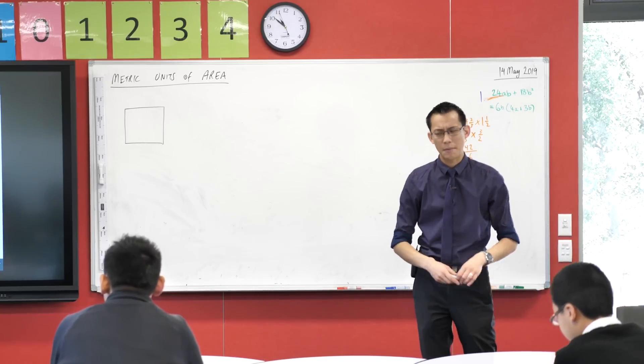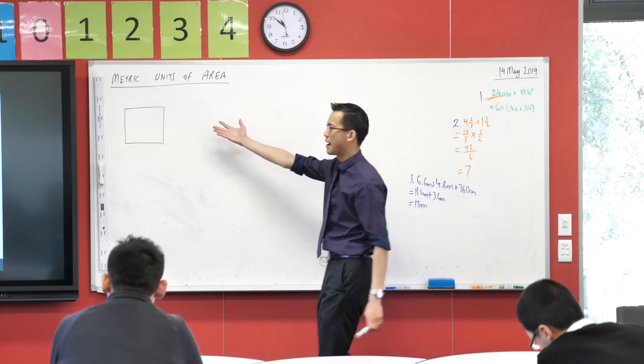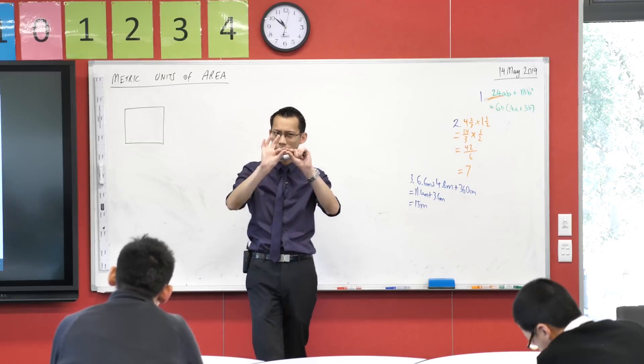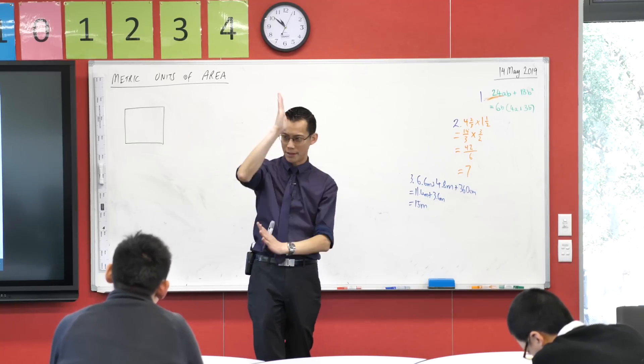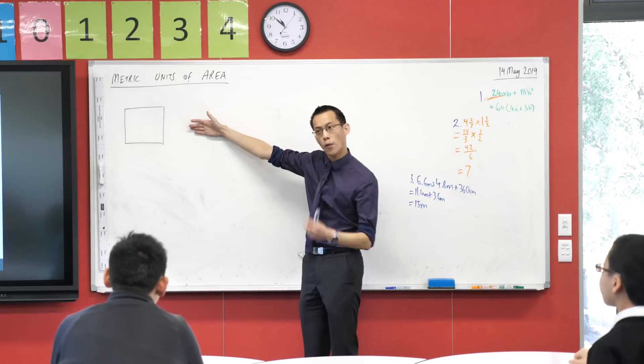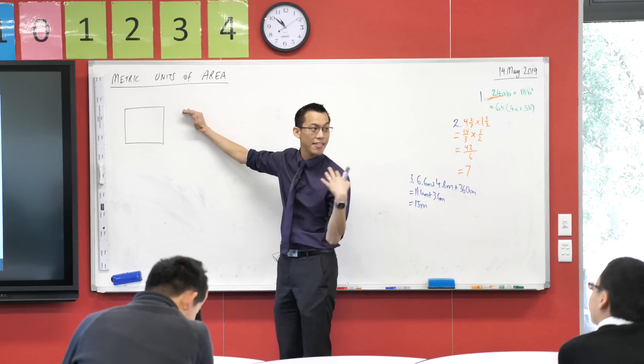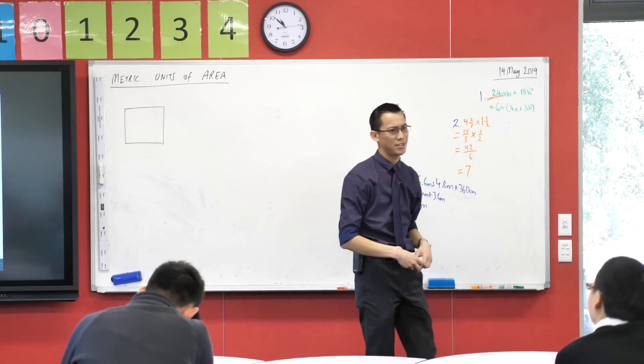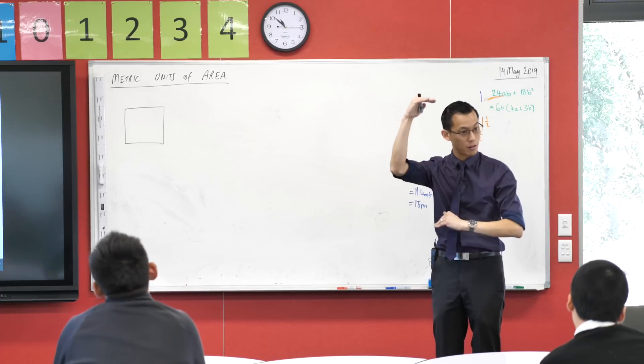When we're talking about area, if you recall, area is just about how much 2D space something takes, right? Length is about one dimension, like backwards and forwards or up and down, but area always requires two dimensions. There's an up and down and there's also a left and right. So when we describe these units for area, we need to have both of them in mind.